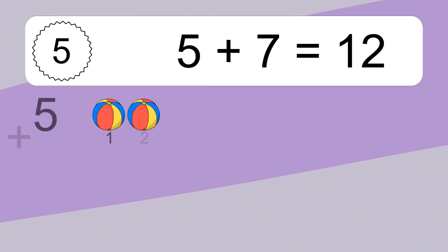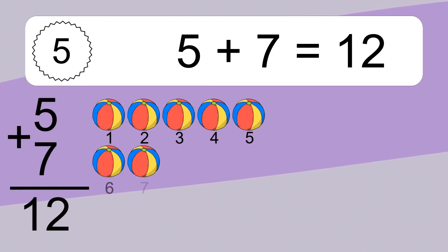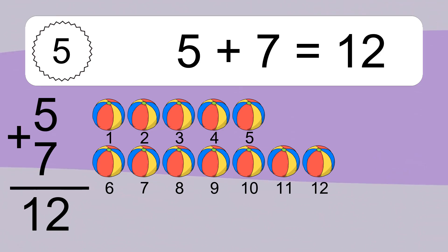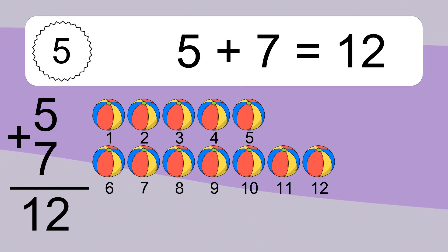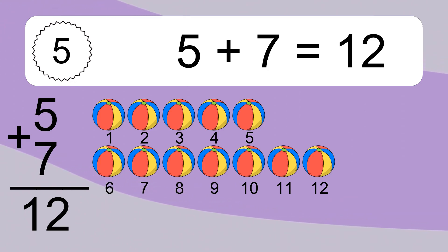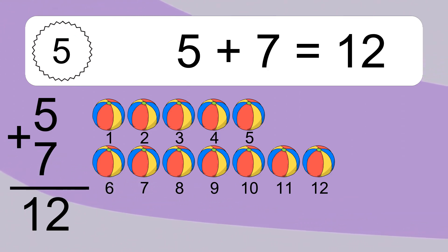5 plus 7 equals 12. Let's count it. 1, 2, 3, 4, 5, 6, 7, 8, 9, 10, 11, 12.